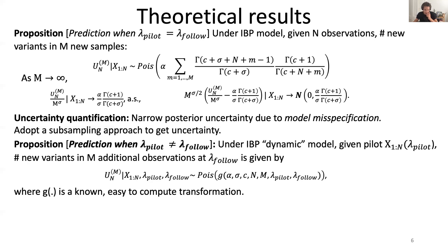I'd like to make a quick remark about uncertainty quantification. While Bayesian models are typically appreciated for their usefulness in uncertainty quantification, our model suffers from narrow posterior uncertainty due to model misspecification. In our experiments, we adopt a subsampling approach which allows us to get calibrated uncertainty quantification. We also extend the previous results to the non-stationary case. The posterior predictive is still Poisson-distributed, but now the parameter depends on the same five quantities as before, as well as the original sequencing depth lambda-pilot and the follow-up study depth lambda-follow. The transformation g is known and easy to compute; you can check out the paper for more details.